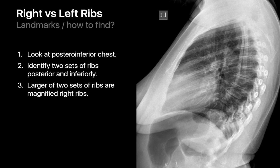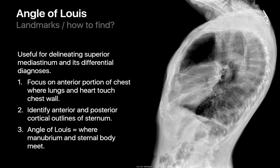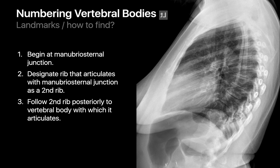The sidedness of ribs can sometimes be identified on a lateral image if you know which side was closer to the image detector. In the United States, it's customary to shoot lateral chest radiographs with the patient's left side against the detector, so the right ribs will appear slightly magnified. The angle of Louis, where the manubrium and sternum meet, can also be used to number vertebral bodies — since the second rib articulates with the manubrial-sternal junction, following rib 2 posteriorly to a vertebral body gives a good approximation of T2.